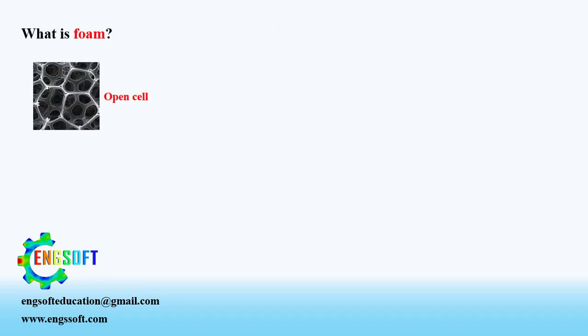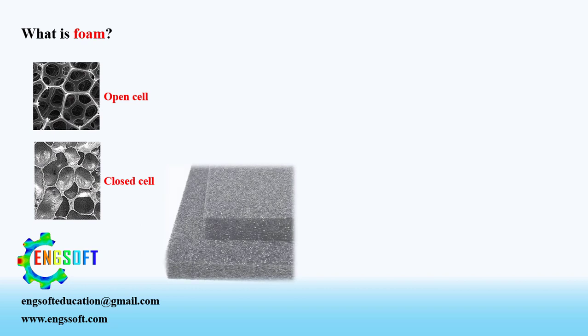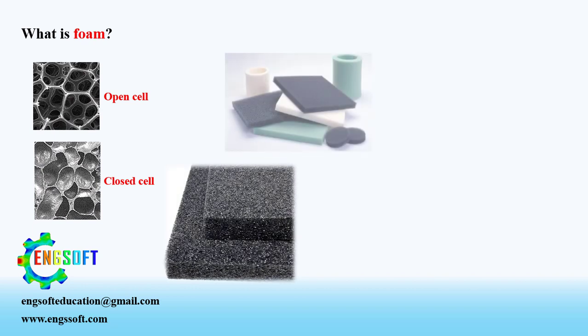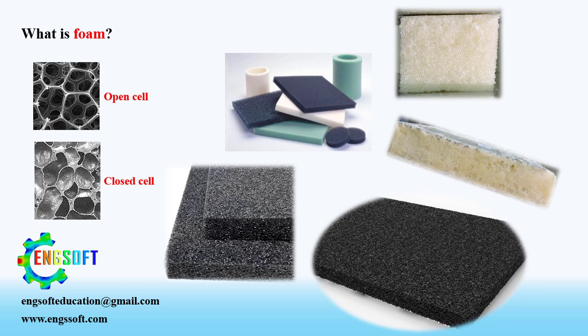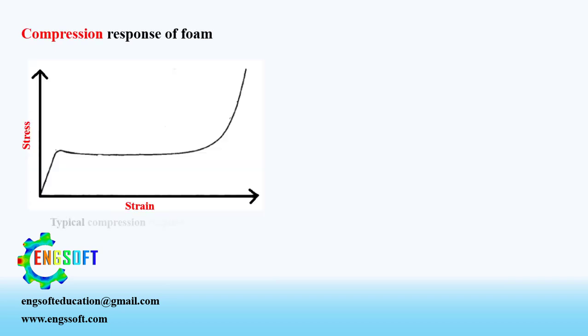Foams are made up of polyhedral cells that pack in three dimensions. The foam cells can be either open or closed. Common examples of elastomeric foam materials are cellular polymers such as cushions, padding, and packaging materials that utilize the excellent energy absorption properties of foams. Foams are commonly loaded in compression, and a typical compressive stress-strain curve is shown.